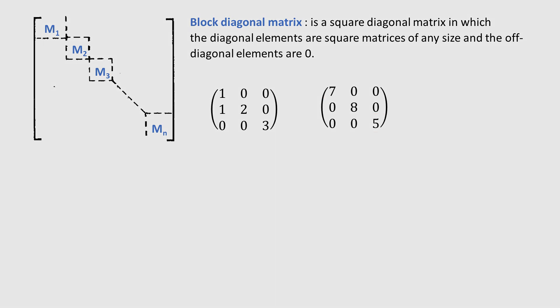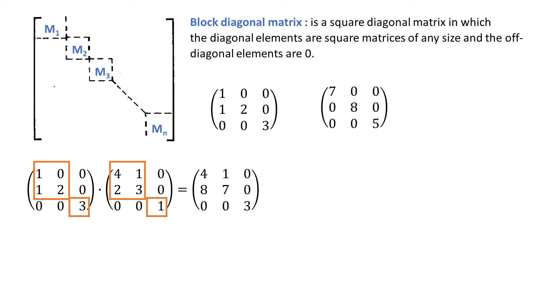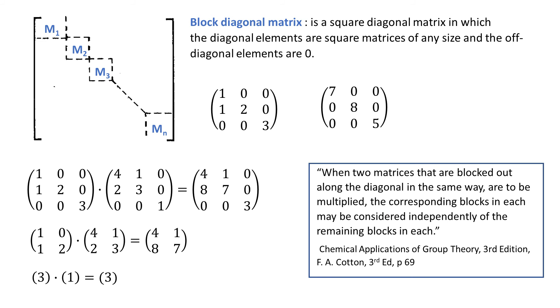Now let's look at some property that block-diagonal matrices have. Let's take two matrices. They are blocked out along the diagonal in the same way. Now let's multiply them. The resulting matrix has also two blocks. Now let's take 2x2 matrices, which are identical as the 2x2 blocks from the diagonal matrices. When we multiply them, the resulting 2x2 matrix is the same as this 2x2 block. So this property allows us to treat the blocks independently when we perform multiplication.